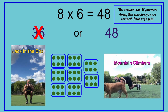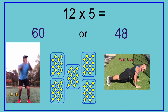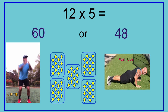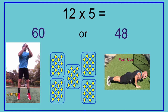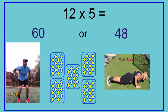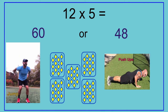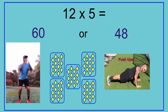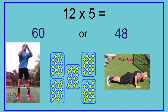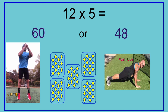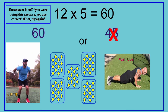12 times 5 equals — 60 or 48? The answer is 60. If you are doing this exercise, you are correct. If not, try again. 12 times 5 equals 60.